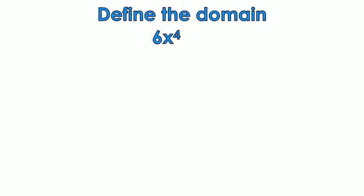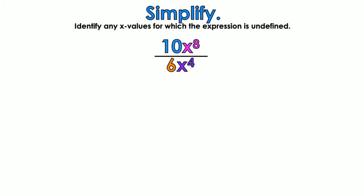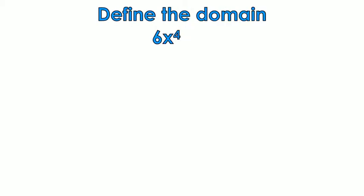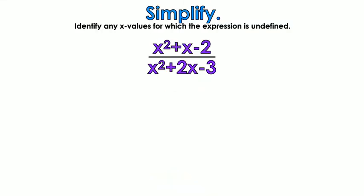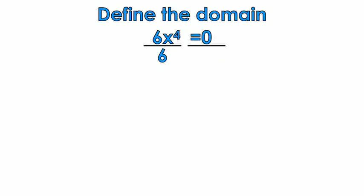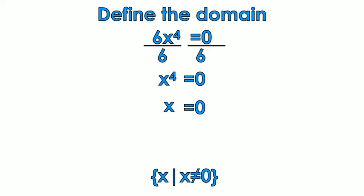Now define the domain. Going back to the original problem, which was 10x to the 8th over 6x to the 4th, you want to take the original denominator, which is 6x to the 4th, and set it equal to 0. Divide by 6 on both sides: x to the 4th equals 0. Take the fourth root of both sides and you get x equals 0. So x cannot equal 0.